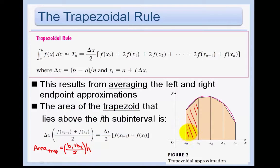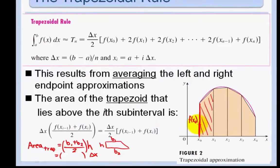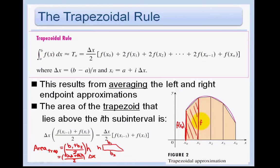Looking at the trapezoid sideways: base one is f(x₀), base two is f(x₁), and the height is delta x. So the area of that first trapezoid is f(x₀) plus f(x₁), all over two, times delta x.